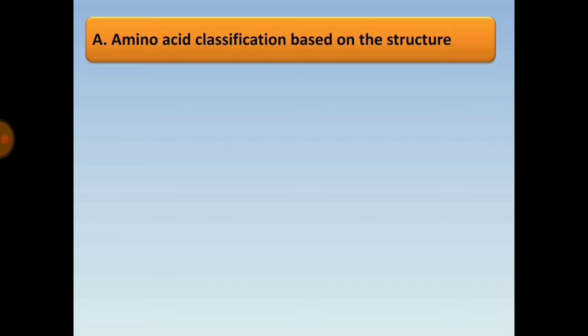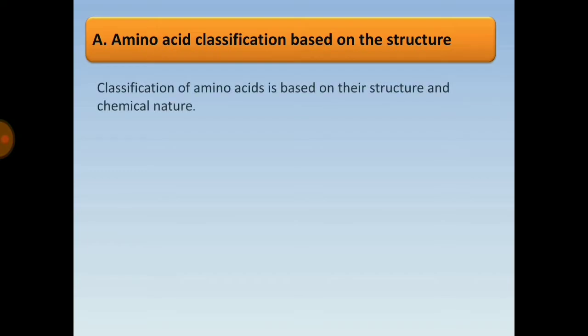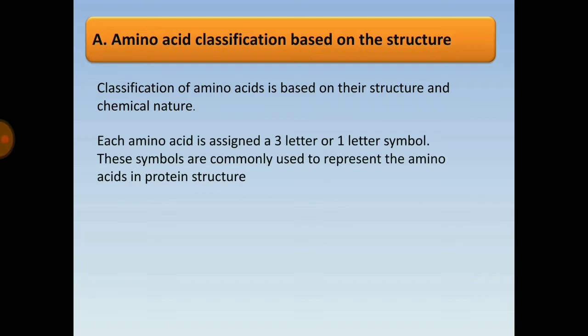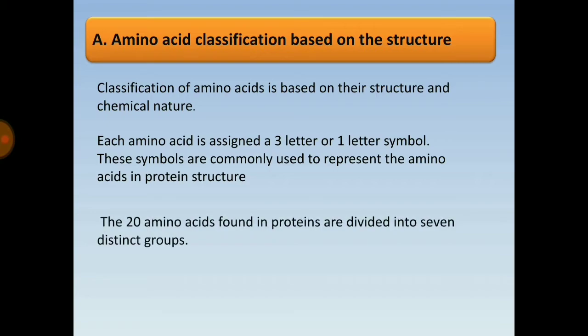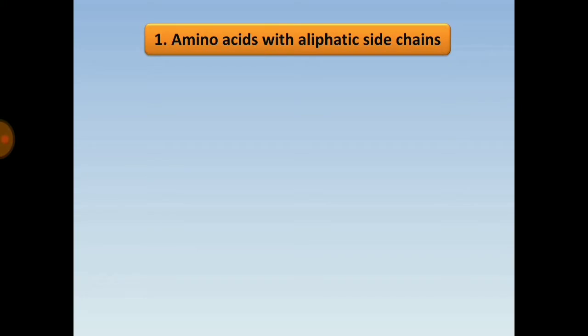Classification of amino acids based on structure and chemical nature: each amino acid is assigned a three-letter or one-letter symbol, commonly used to represent amino acids in protein structure. The 20 amino acids found in proteins are divided into seven distinct groups. The first group is amino acids with aliphatic side chains.